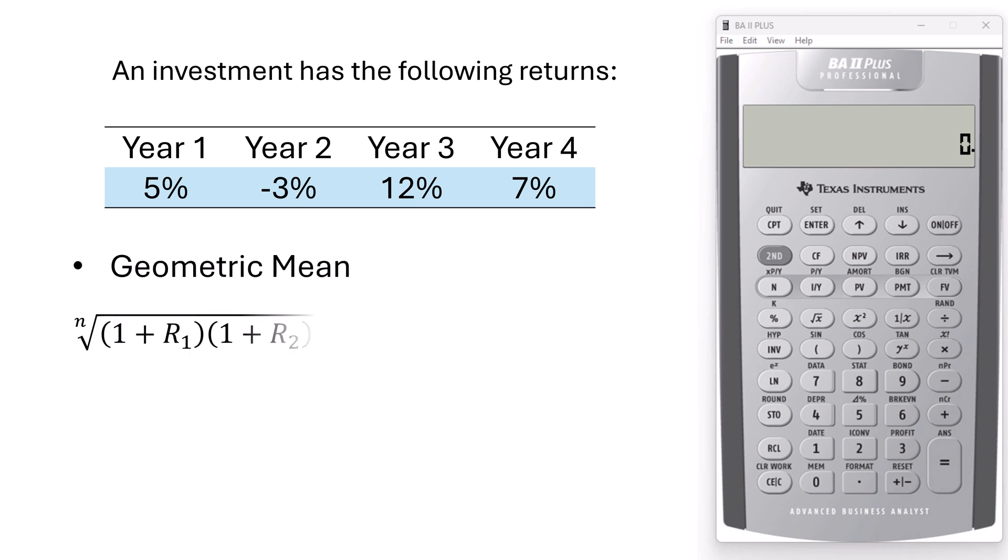To calculate the geometric mean, we use this formula, which can also be presented as follows, where R represents the rate of return.